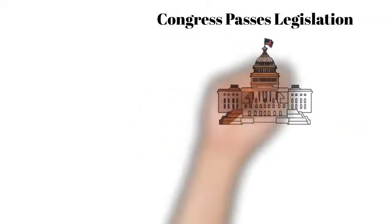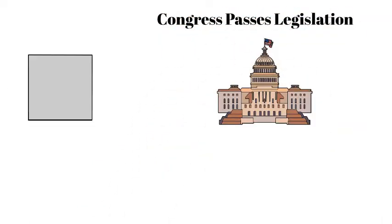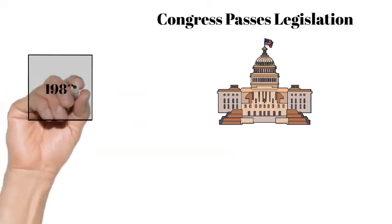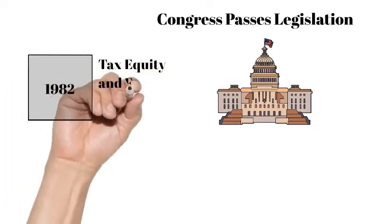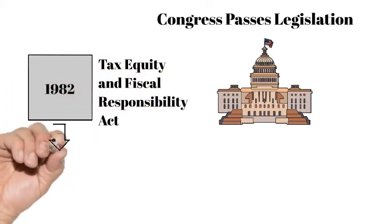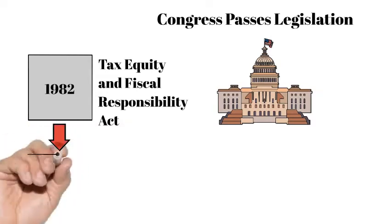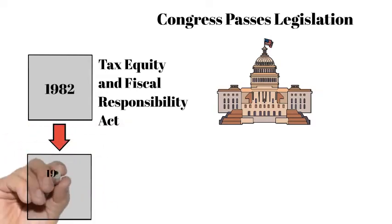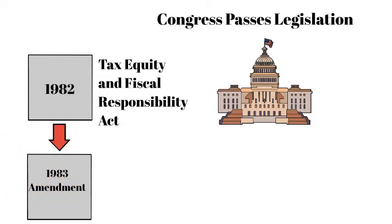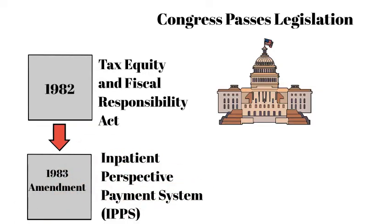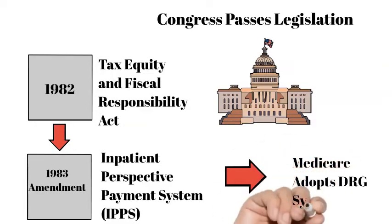Medicare's adaptation of the original DRG concept occurred in 1982 when the U.S. Congress passed the Tax Equity and Fiscal Responsibility Act. Specific provisions reformed the Medicare payment methodology. In 1983, Medicare adapted the original DRG system for hospital reimbursement under an amendment and regulations termed the inpatient prospective payment system, sometimes referenced as IPPS.